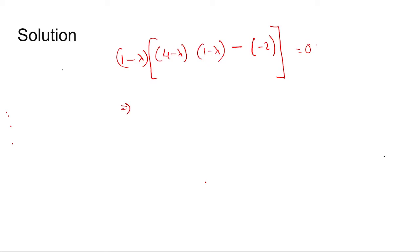Then we have 1 minus lambda times 4 minus lambda minus 4 lambda plus lambda square plus 2 equal to 0, and then we have this is coming out lambda square minus 5 lambda plus 6 into lambda minus 2 equal to 0.